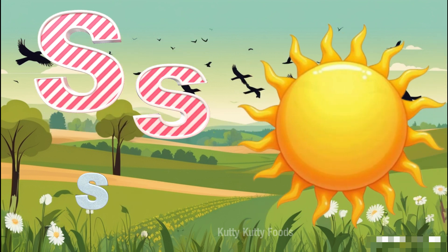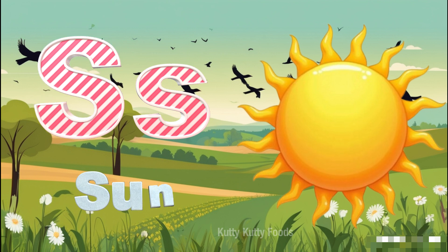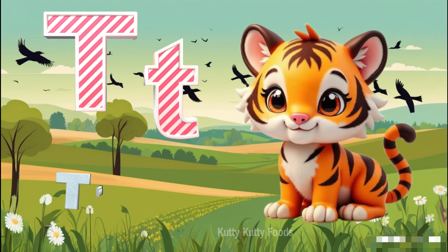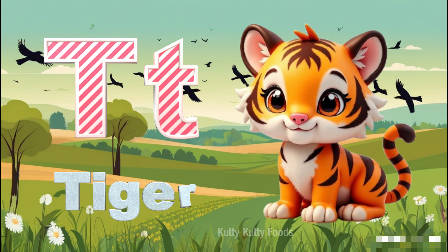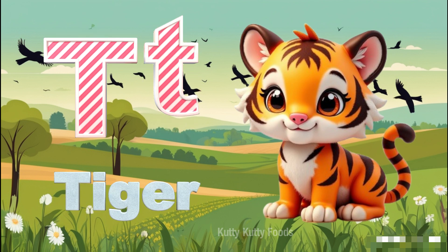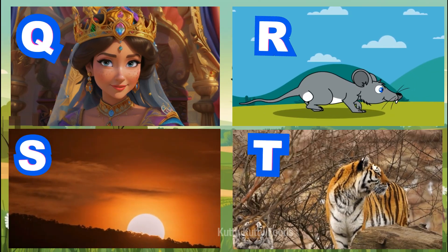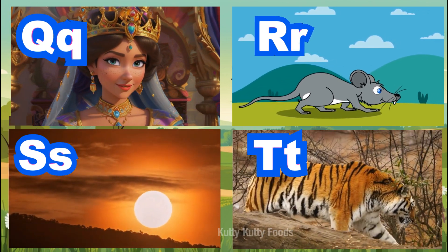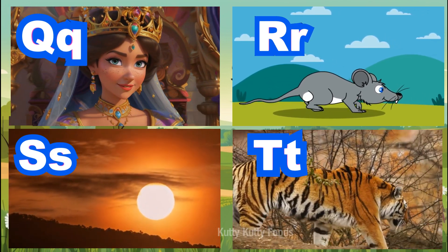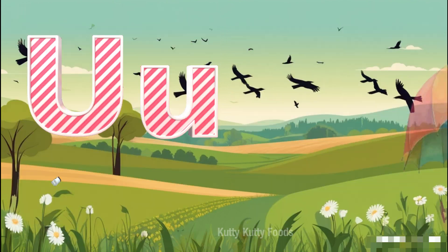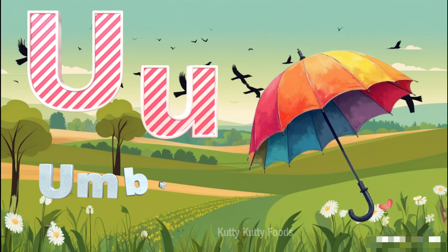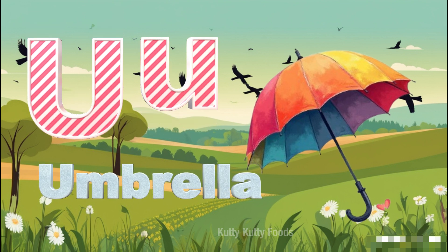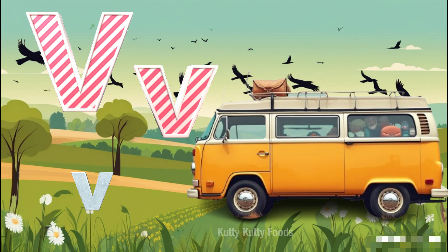S for Sun, S for Sun. T for Tiger, T for Tiger. W, X, Y, and Z. Now I know my ABC's, next time won't you sing with me. U for Umbrella, U for Umbrella. V for Van.